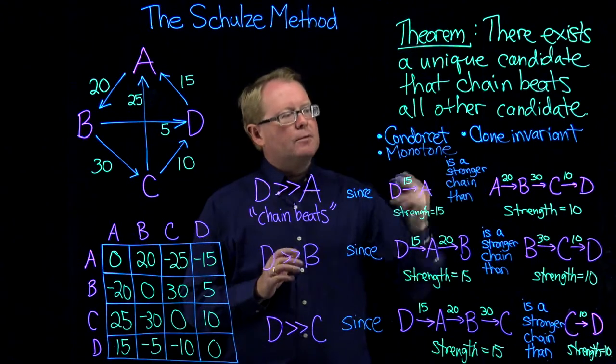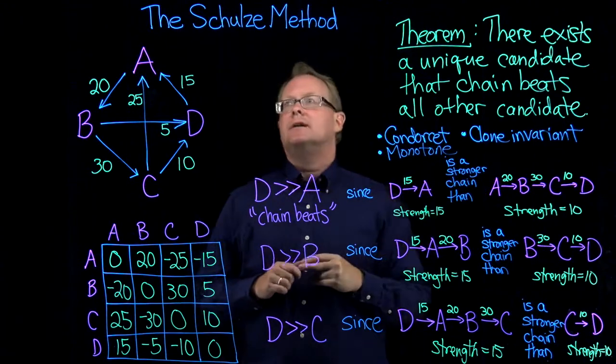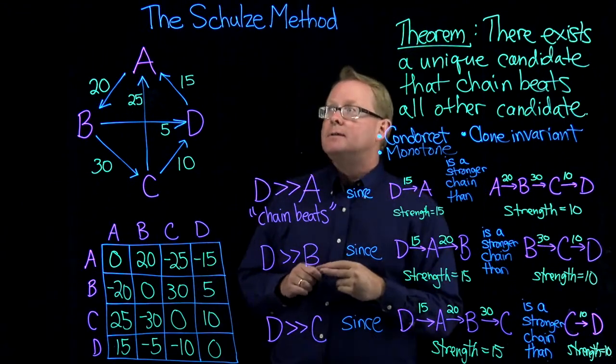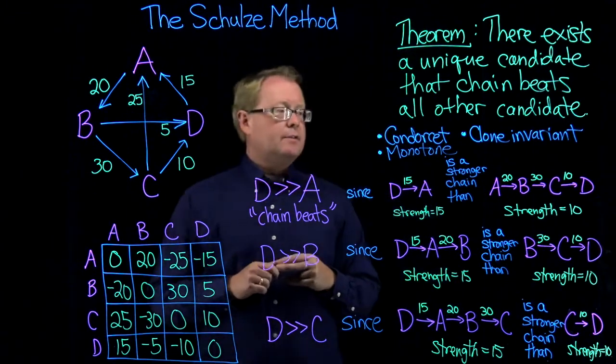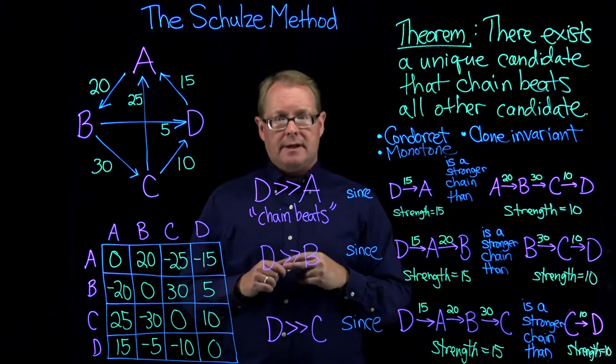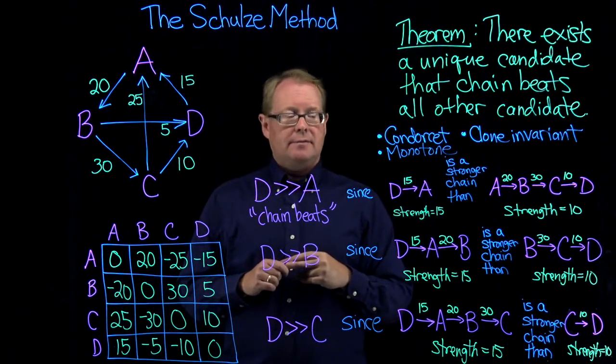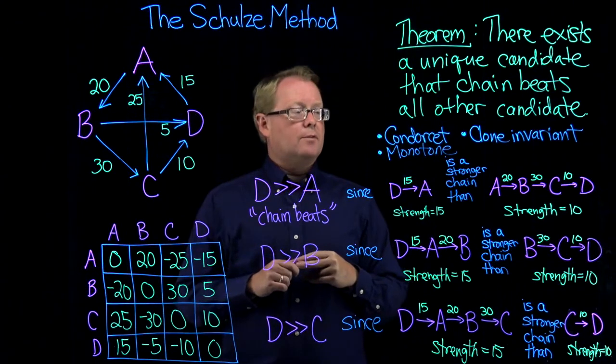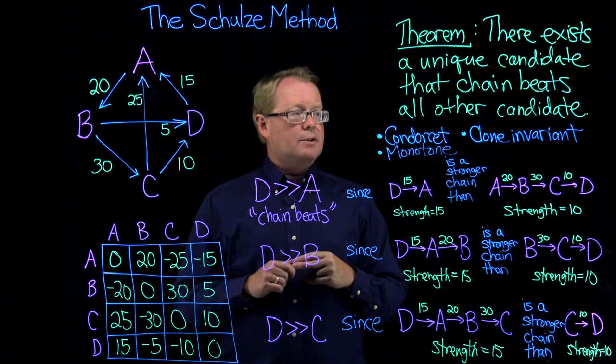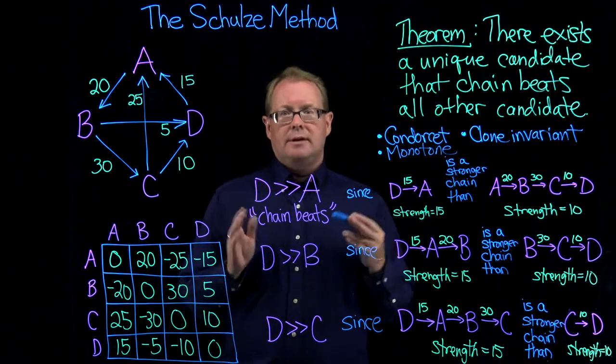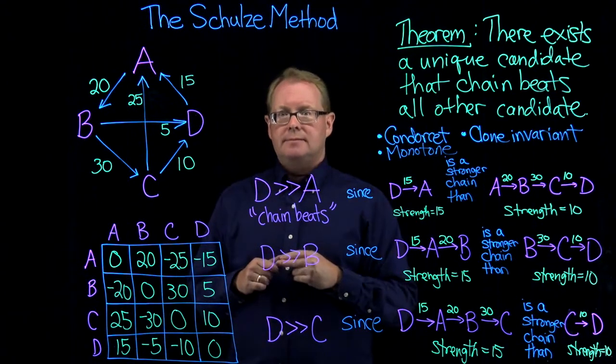These three properties — Condorcet, clone invariance, and monotonicity — are really, really good properties that the Schulze method has. For this reason, it's my second favorite method for determining the winner of a preferential ballot election, second only to ranked pairs.